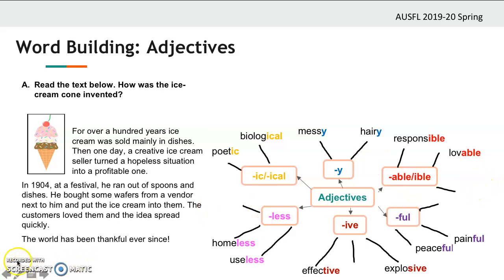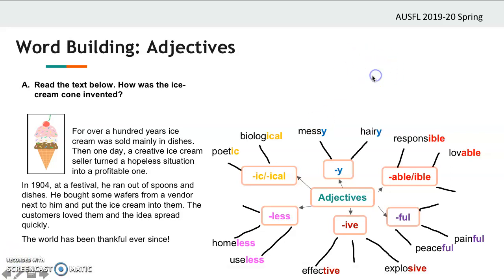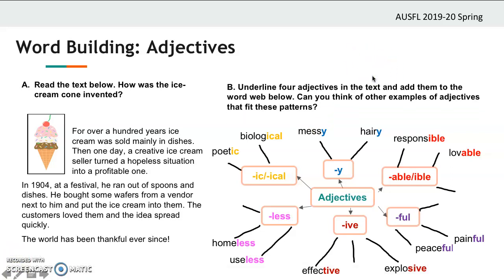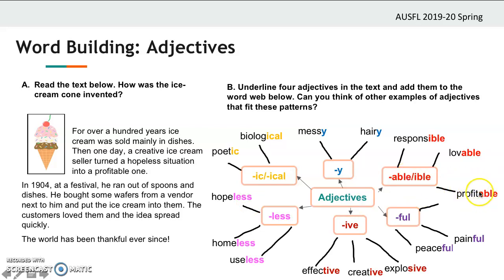Pause the video if you need time. Okay, let's see. The first one is 'creative' — a creative ice cream seller. The other one is 'hopeless' — without hope. Next is 'profitable' — able to make profits. And the last one is 'thankful.'